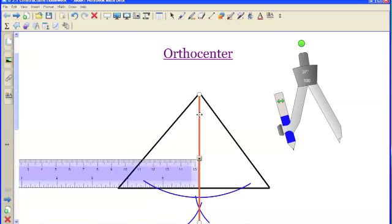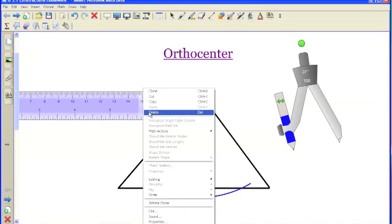If the altitude happens to be slanted behind the object you're using or outwards, then you know that your altitude is not very accurate. So that's a way to check to see that your altitude is a good right angle.